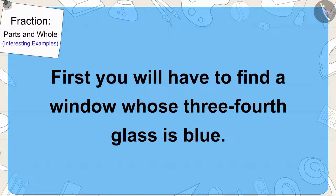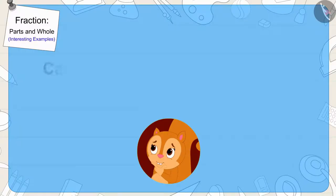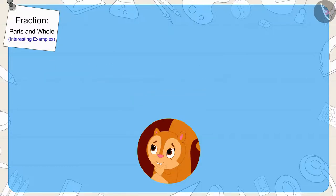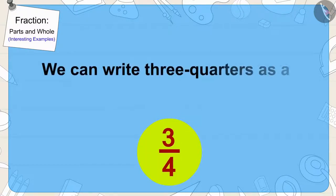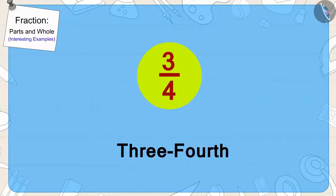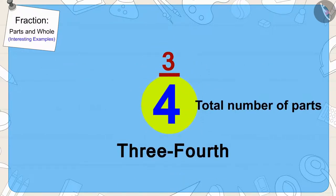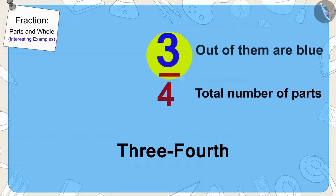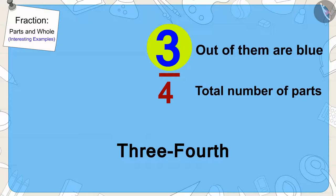It was written that first Chanda will have to find a window whose three-fourth glass is blue. Children, can you write three-quarters as a fraction? We can write three-quarters as a fraction like this. The number four shows that our whole is divided into four equal parts, and three parts out of them are blue.